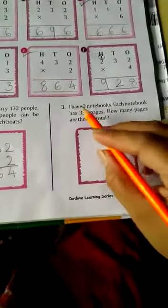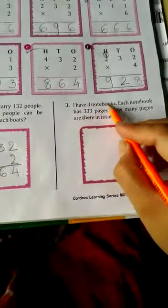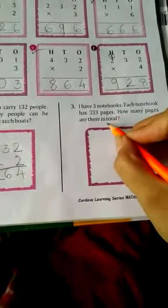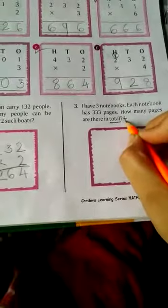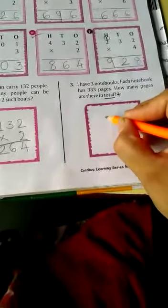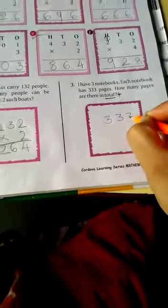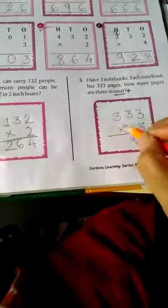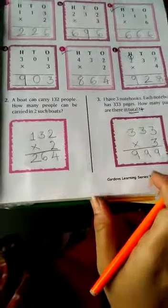Here, I have three notebooks. Each notebook has 333 pages. How many pages are there in total? Here total variable is there which means you have to do plus. So now 333 is the total pages and 3 notebooks are there. 3 threes are 9, 3 threes are 9, and 3 threes are 9. So answer is 999.